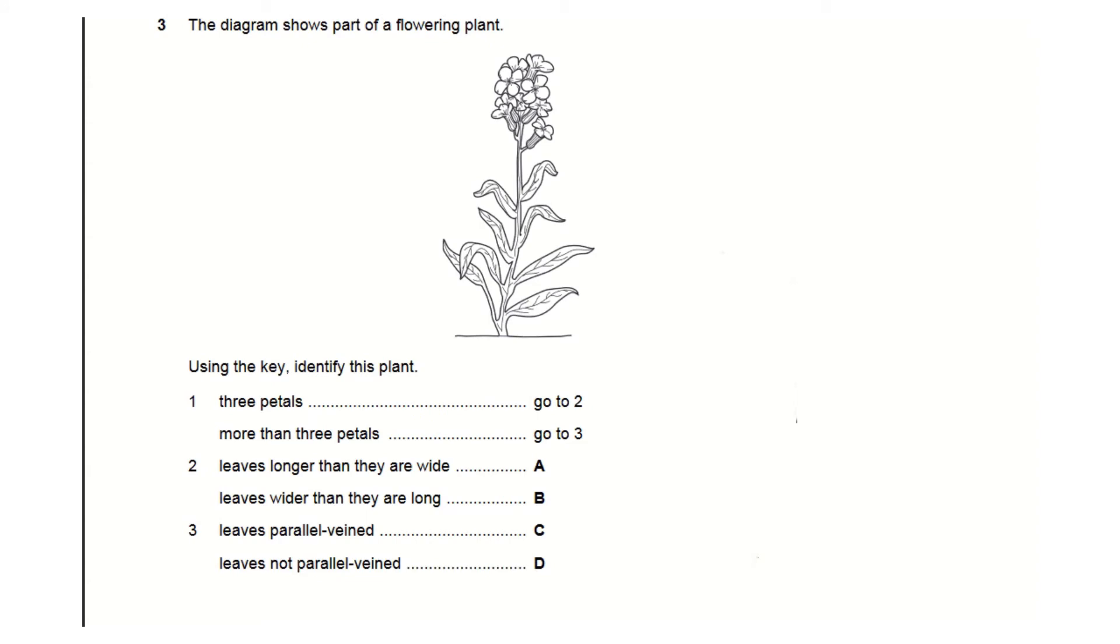Here's another example from the year before, but we look at the same things. Again, we're showing a flowering plant and we first look at how many petals are there. Are there three or more? I can quickly count one, two, three, four. We have more than three petals.